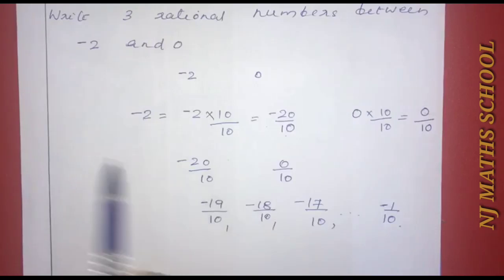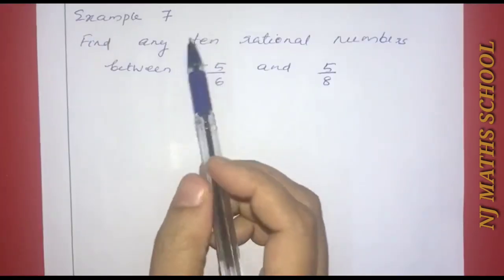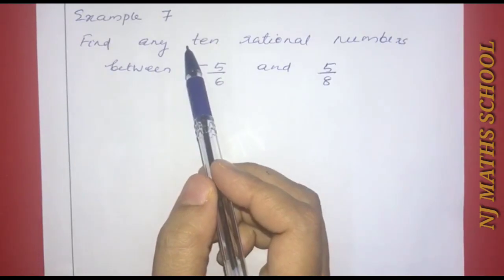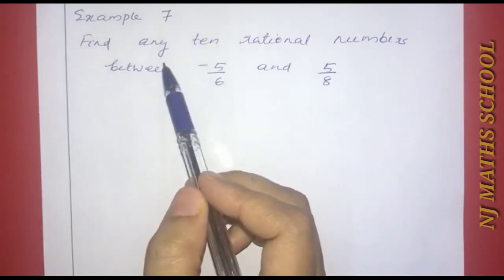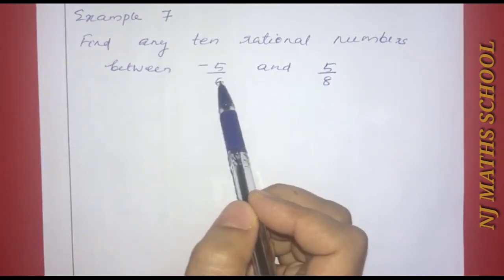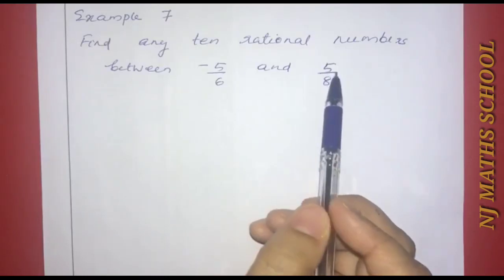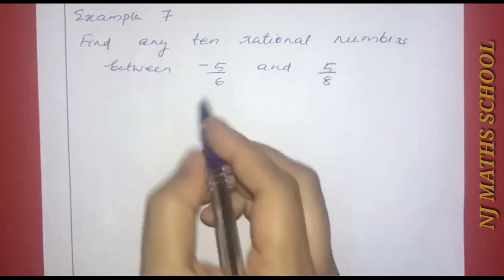We can choose any 3 rational numbers from these. Next, Example 7: Find 10 rational numbers between negative 5 by 6 and 5 by 8.